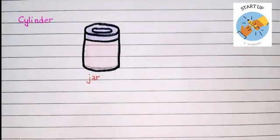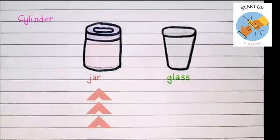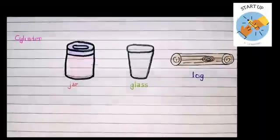Now let's talk about the cylinder shapes. Let's see some example of it. The first example is a jar. The second example is a glass. The third example is a log.